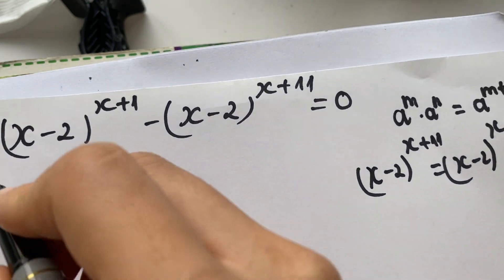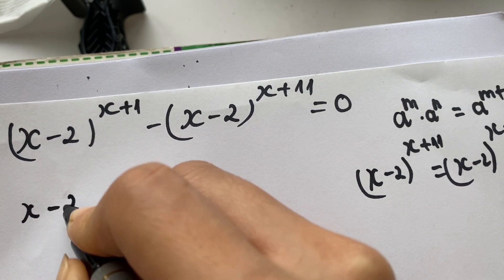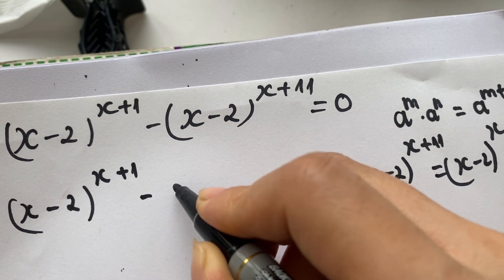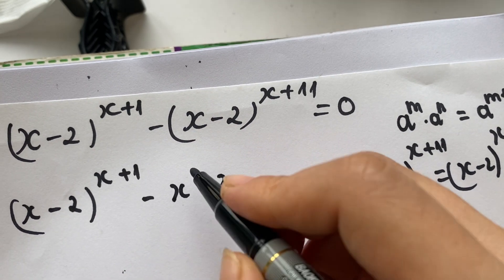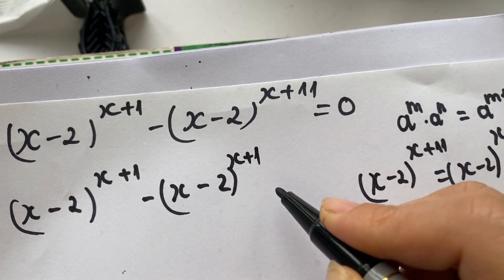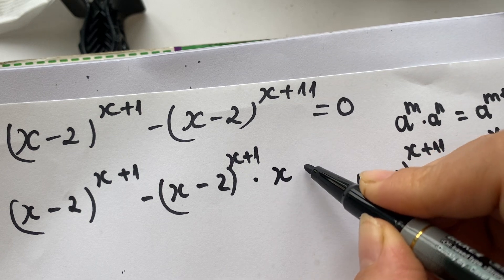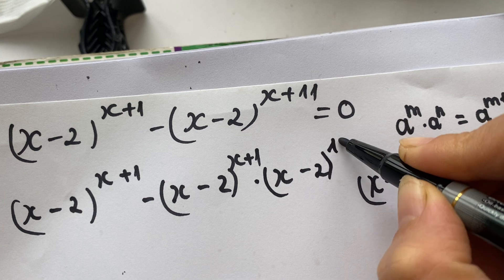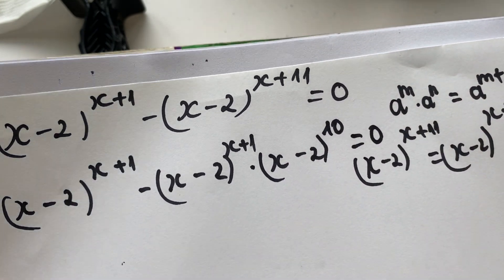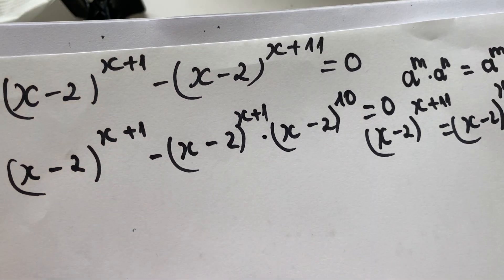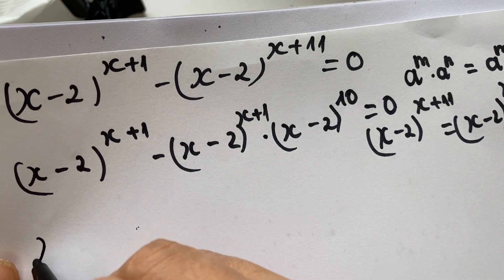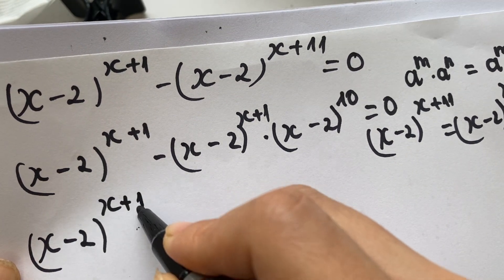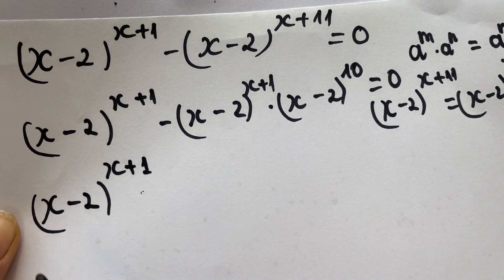So we factor out (x minus 2) to the power (x plus 1). In the first term, we have (x plus 1), and we factor (x minus 2) to the power (x plus 1) from both terms.